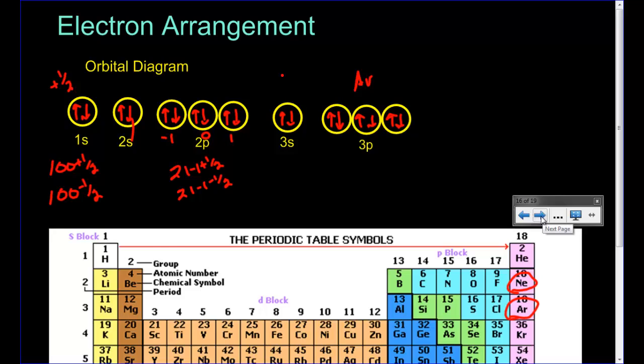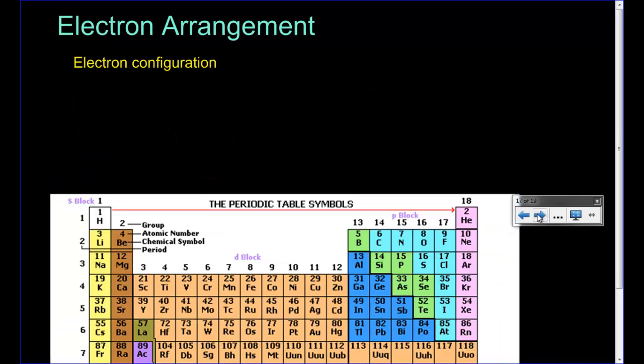To make our lives a little easier, we're going to start looking at what's called an electron configuration. So if we look at hydrogen again, remember that we had a 1s, and we had one circle, and then one arrow. Well, an easier way to write that would be taking the 1s, and then just telling how many electrons exist there. So it would say 1s1.